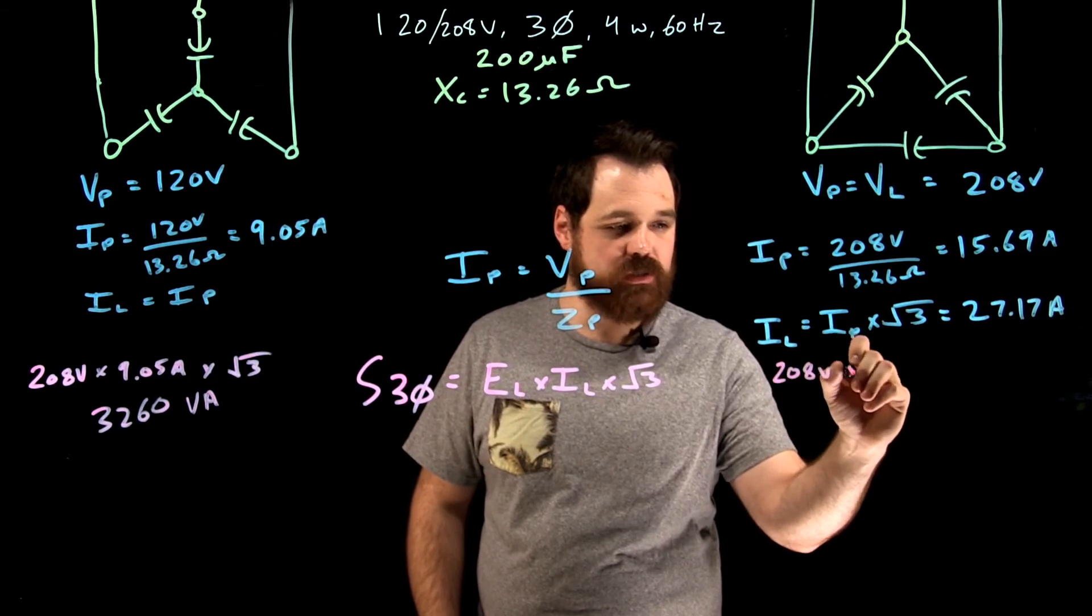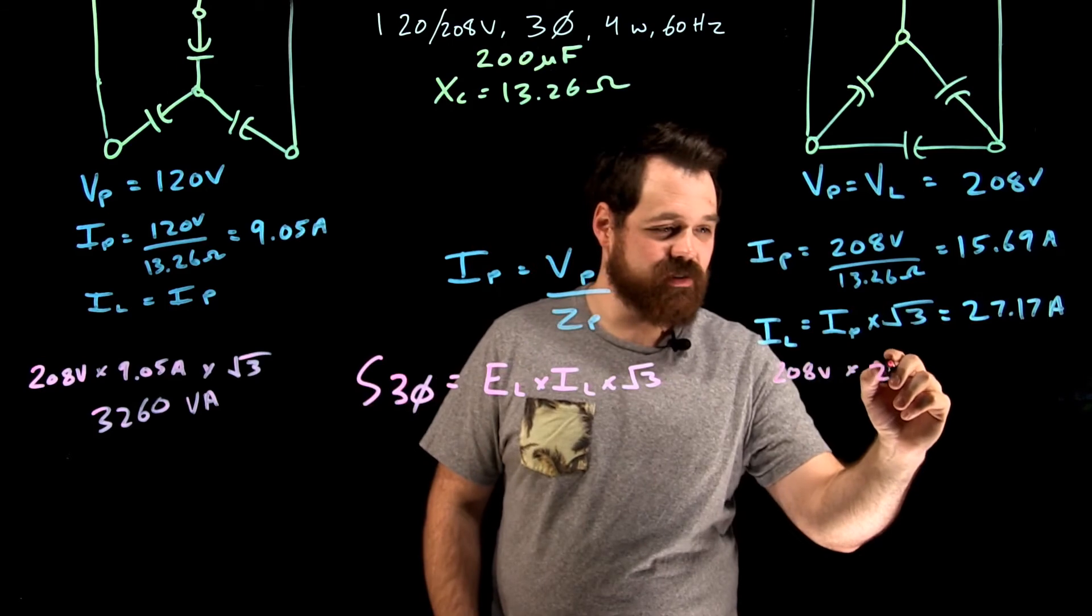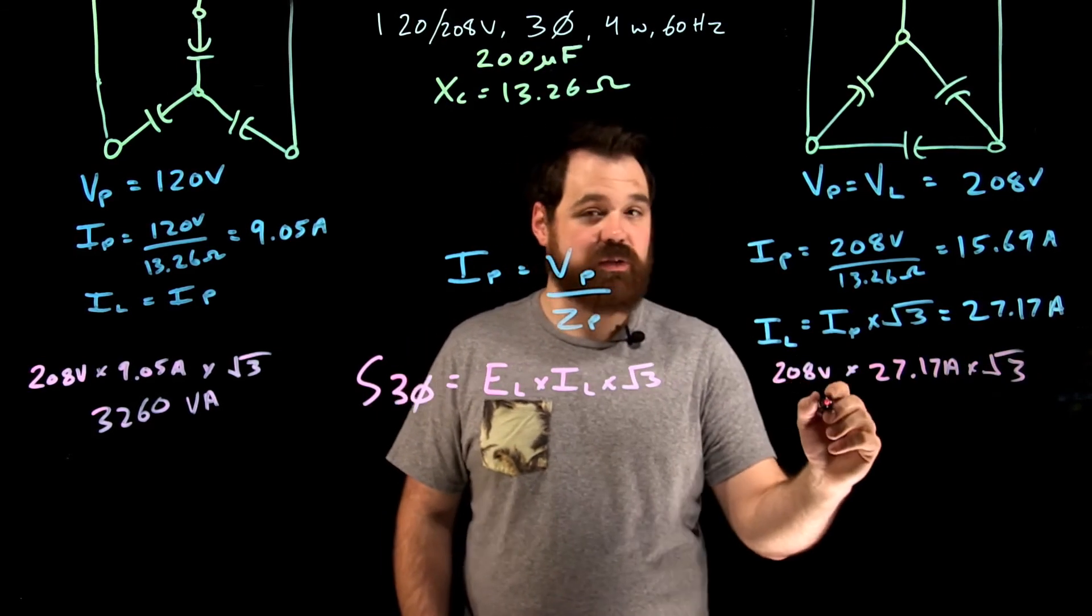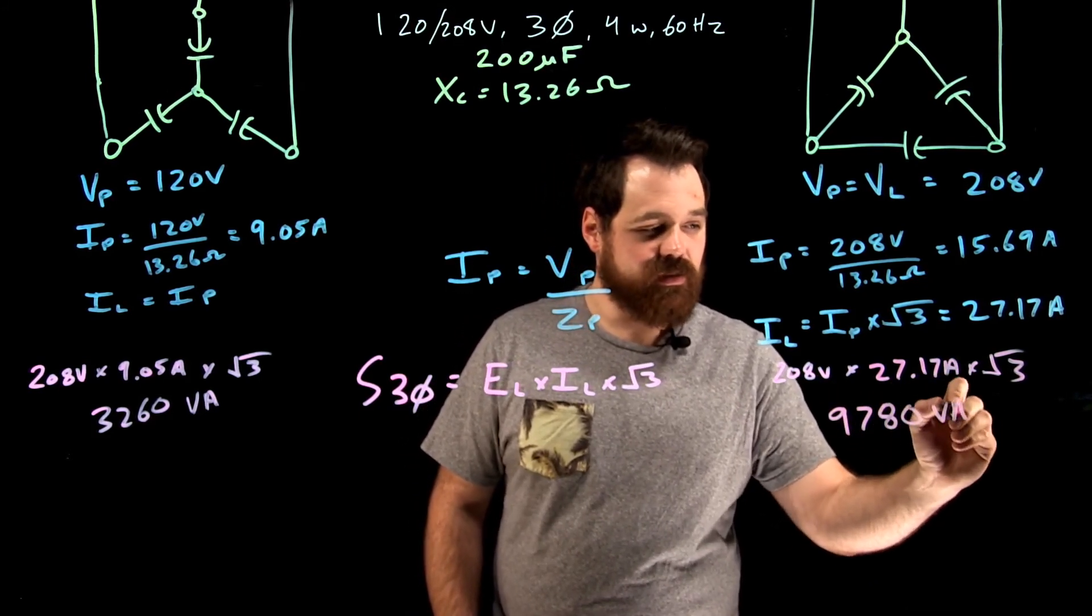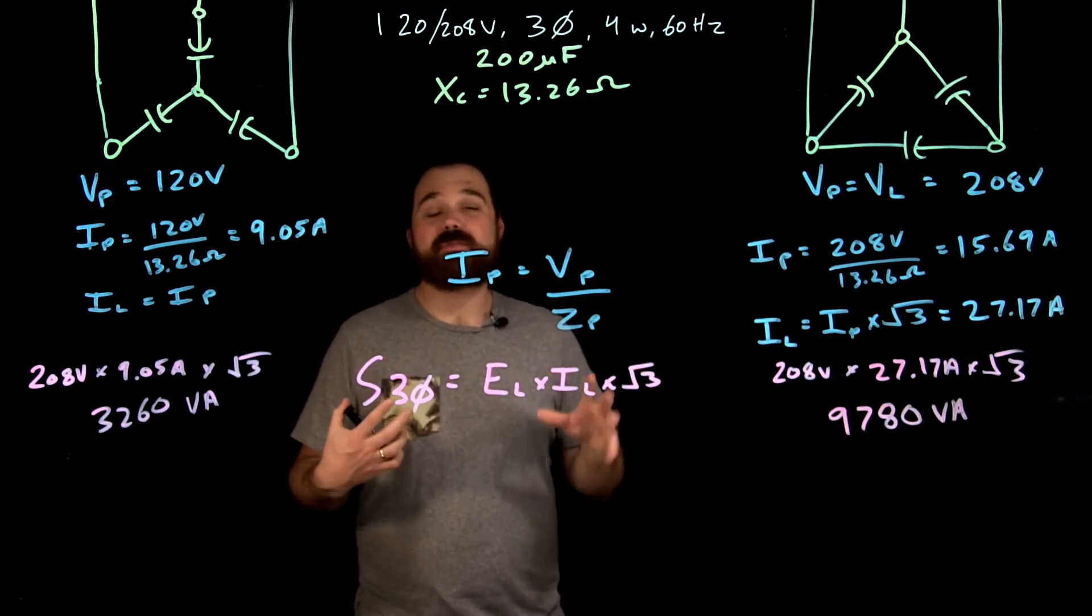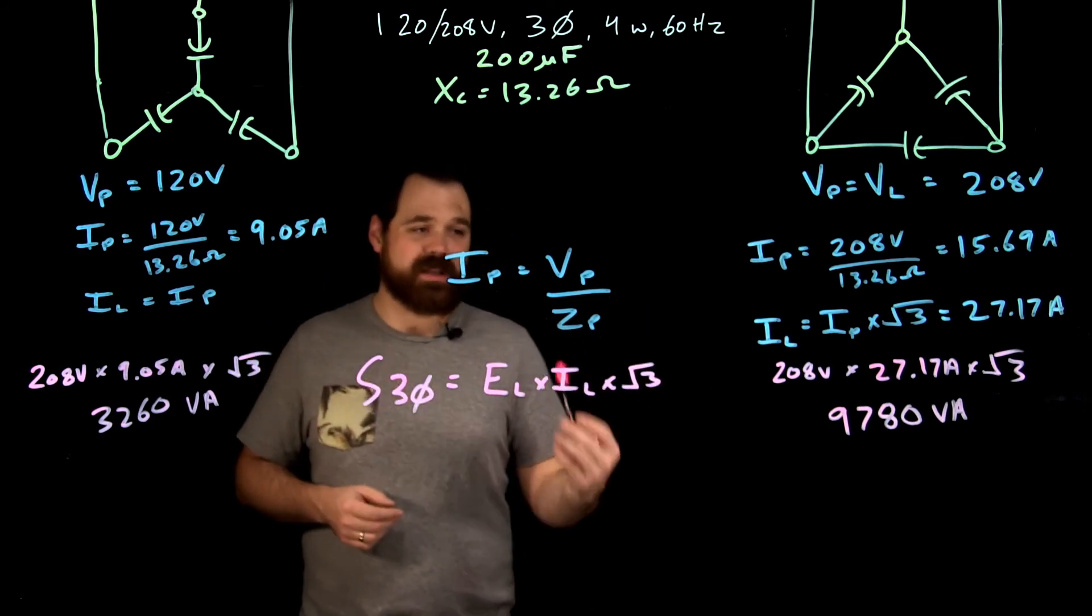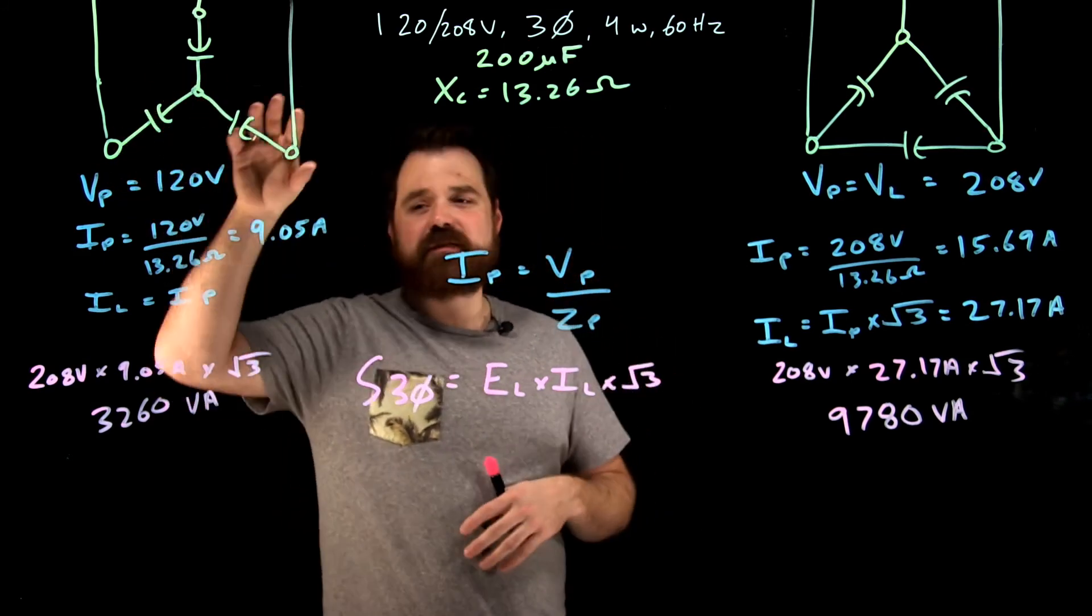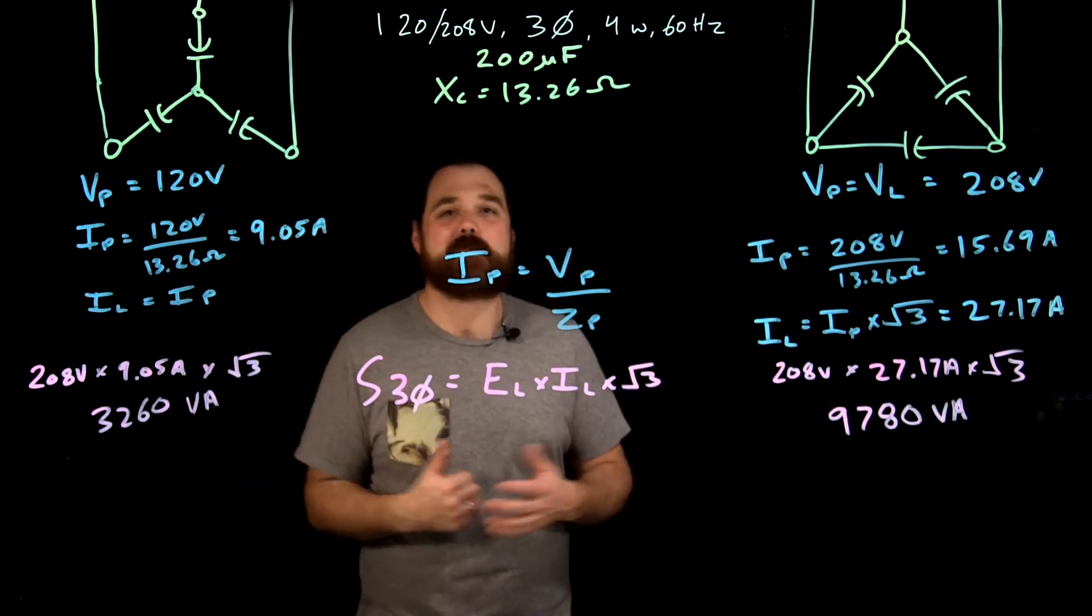We do the same thing over here, 208 volts times, in this case, line current, remember, 27.17 amps times root three. We actually get also three times larger, so I get around 9780 VA. Just connecting it up in that delta configuration. So if I'm looking for a really big capacitor bank and I want to maximize those capacitors, I might be considering hooking it up in delta. If I'm following a lower voltage capacitor, maybe a little bit safer or cheaper even, I'd be looking at hooking it up in that Y configuration, just depending on my application.